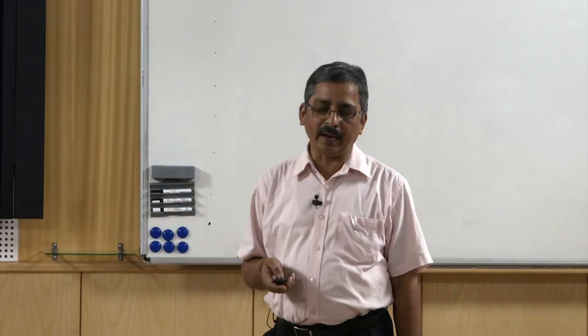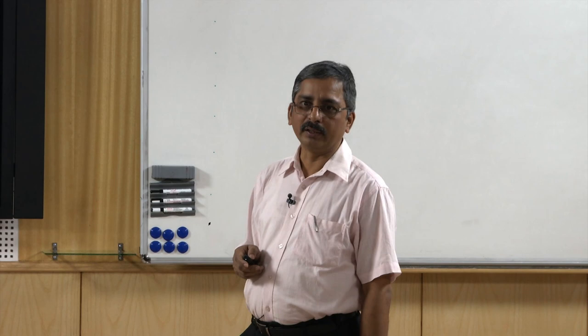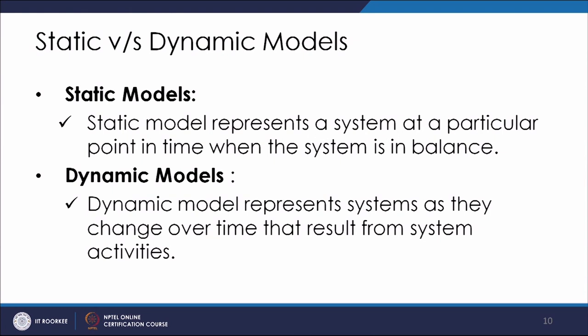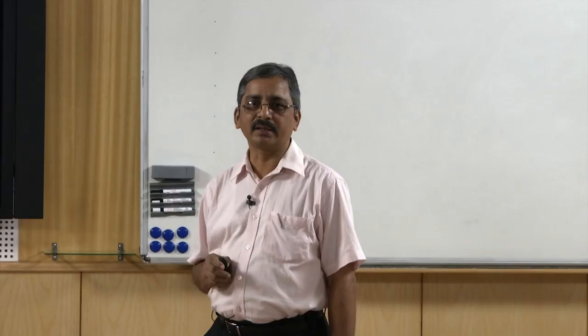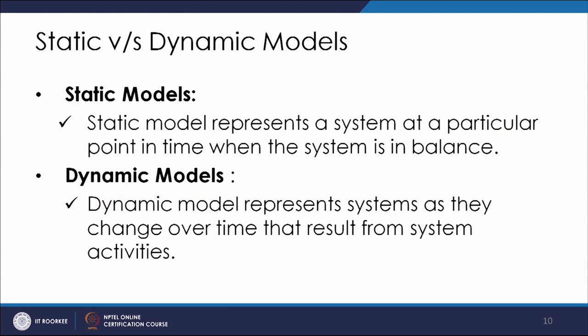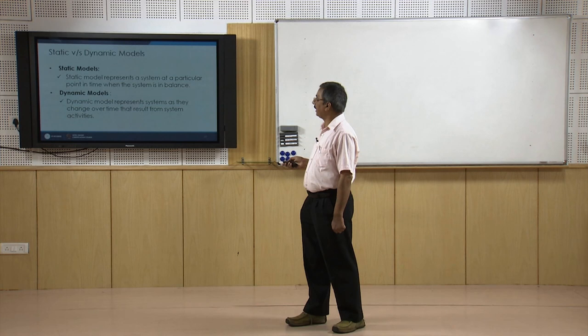Models can further be classified as static and dynamic models. Static models represent the system at a particular point in time when the system is in balance or in a state of equilibrium. Dynamic models represent the system as it changes over time, and that change occurs because of certain activities within the system.